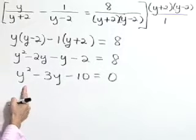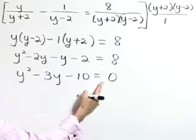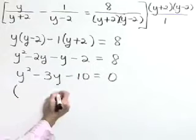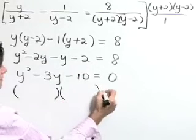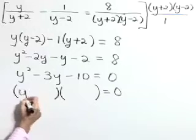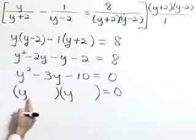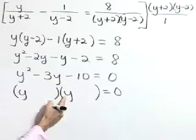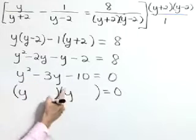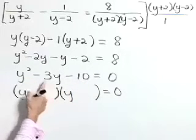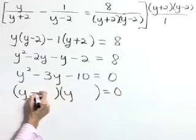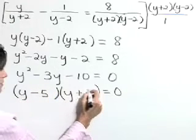So we have a quadratic equation. It's in standard form. Let's solve this using the factoring method. This trinomial on the left is factorable. First terms are y and y to give a product of y squared. Factors of negative 10 that sum to negative 3 are a minus 5 and plus 2.